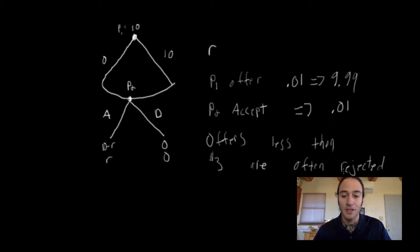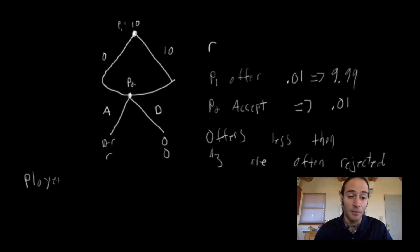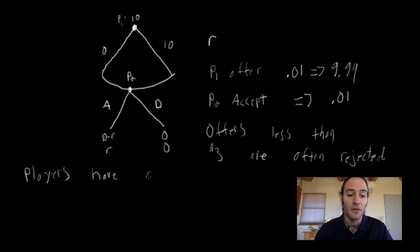So, of course, this is not a Subgame Perfect Equilibrium for Player 2, because as we said above, Player 2 should accept any offer greater than or equal to a penny. So what does this mean? It can mean one of two things. Well, it can mean multiple things. One could be that players don't really understand the nature of the game, which is probably not the right explanation in this case, because it's a fairly simple game. More realistically, the accepted intuition is that players have a preference for fairness.